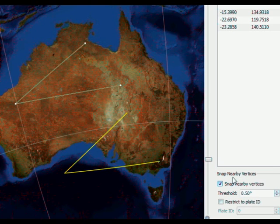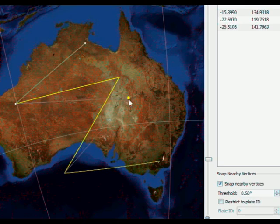Last but not least, the new Snap Nearby Vertices tool makes digitizing related geometries easy.